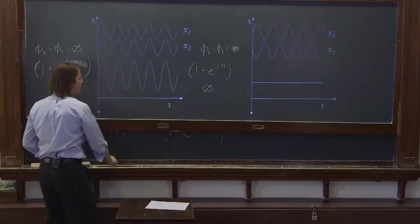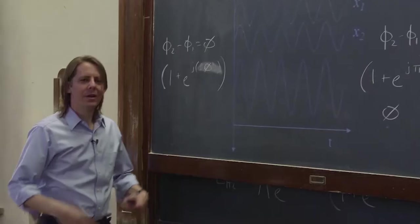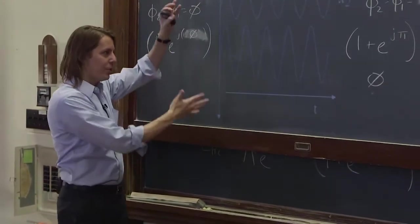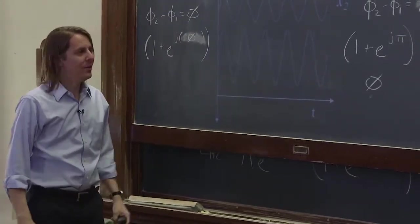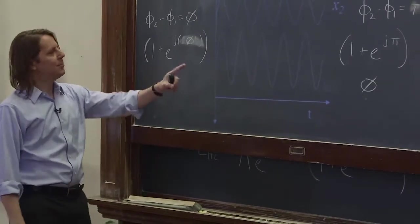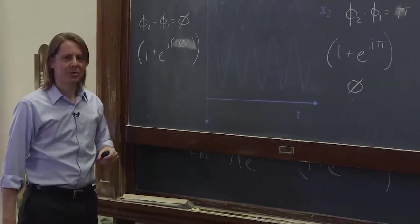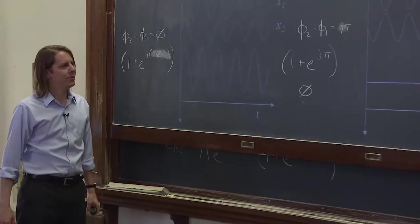So you can see, intuitively, you can think about these functions adding and subtracting constructive interference, destructive interference, is what we'll eventually call it. But you can get it mathematically really simply with complex exponentials, rather than dealing with a bunch of identities and trigonometry.